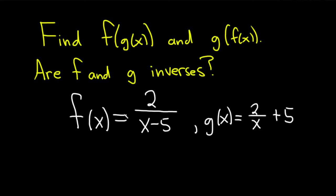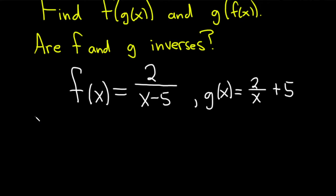Let's go ahead and work it out and see what happens. So, solution. Let's start with f of g of x. So f of g of x basically means that we're plugging g into f. So the first step will be to actually replace g with what it actually is. This is f of, and then g of x is 2 over x plus 5.